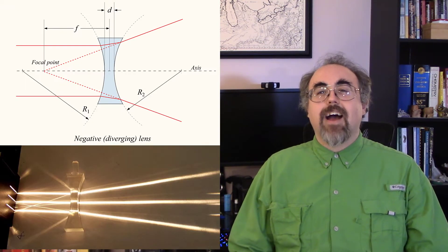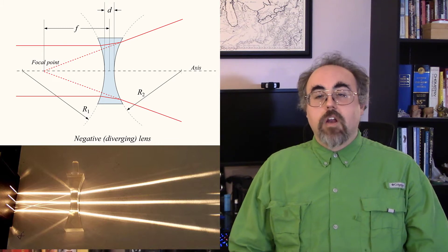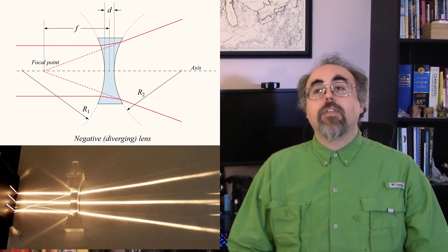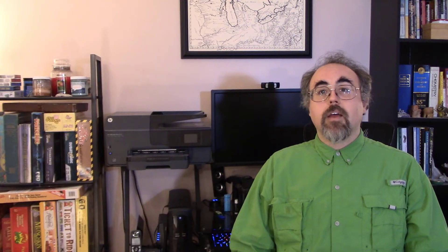Concave lenses do the opposite — they curve inward like a bowl and cause light to spread out. Depending on the medium and angles, you can spread light out into different wavelengths, because each wavelength bends slightly differently depending on the material and its shape. Since they bend differently, if wavelengths are mixed together — as in white light — they will spread out into a spectrum.